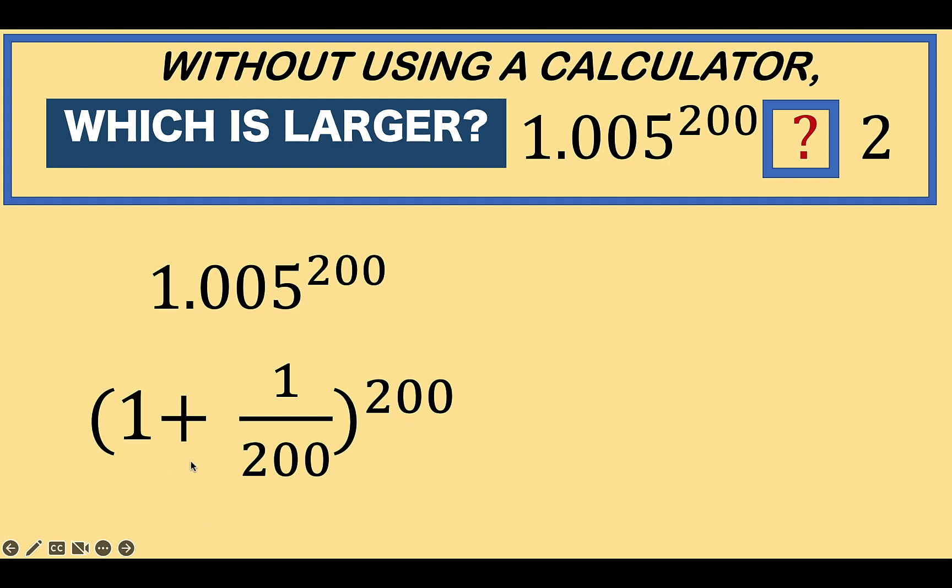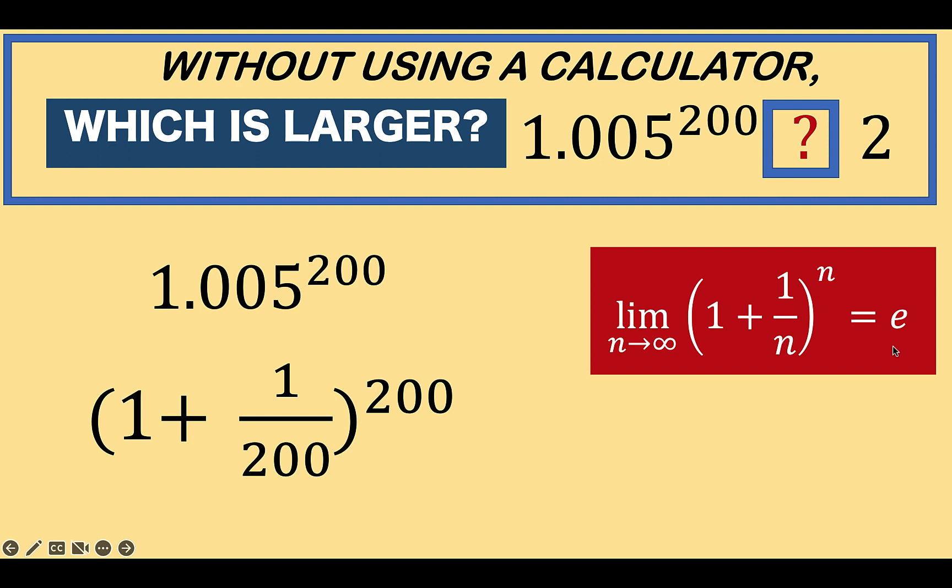Now, for those of you who are familiar with the Euler number e, you know that the limit of 1 plus 1 over n all raised to n as n approaches infinity is the Euler number e which is approximately 2.71. And notice that this form 1 plus 1 over 200 all raised to 200 is similar to this form.